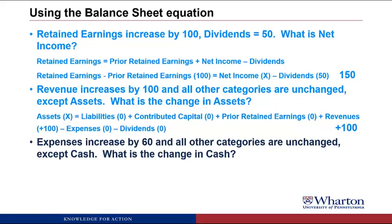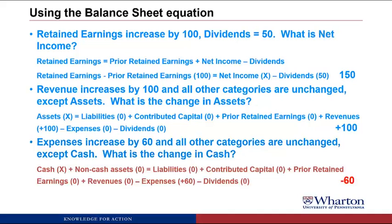Problem 7: Expenses increase by 60 and all other categories are unchanged except cash. What is the change in cash? We use the same complete balance sheet equation, splitting assets into cash and non-cash. The only things changing are cash and expenses. Note that expenses are subtracted from the other things — so an increase in expenses reduces the right-hand side. The left-hand side also has to go down by 60, so cash would decrease by 60.